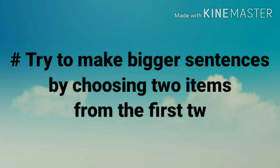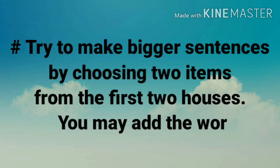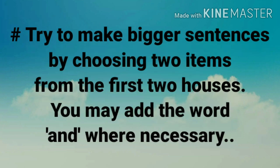Next, try to make bigger sentences by choosing two atoms from the first two houses. You may add the word 'and' where necessary. Try to make bigger sentences — Manje, Mothi Vaakya Taayar Karai Chih. By choosing two atoms — Don Shabda Aplela Jasa Gheun Tia Tikaani Vaakya Taayar Karai Chih.